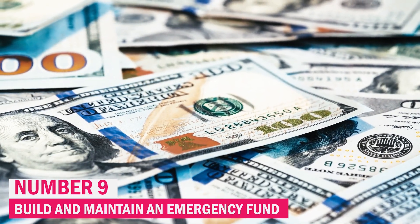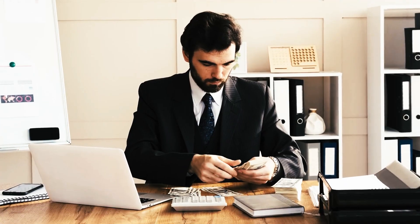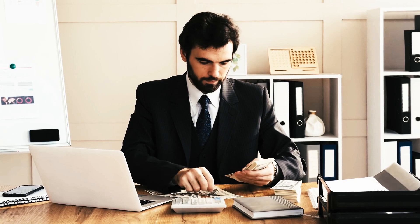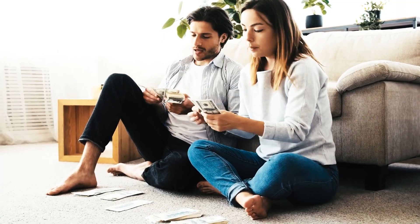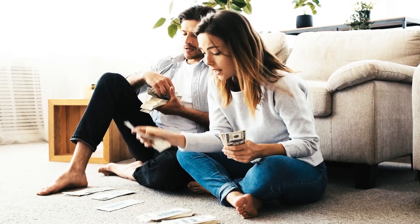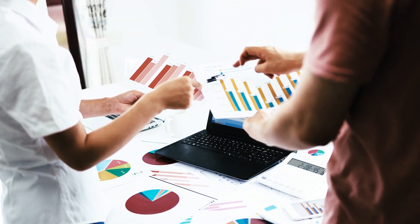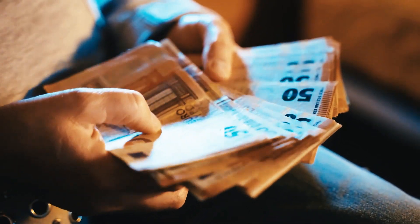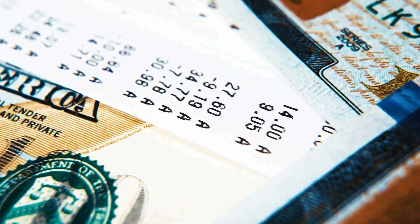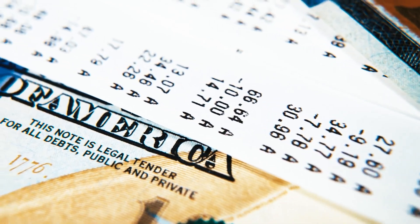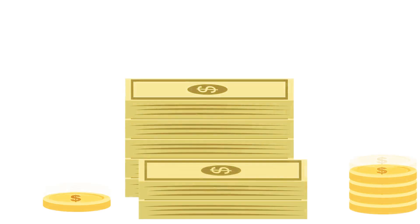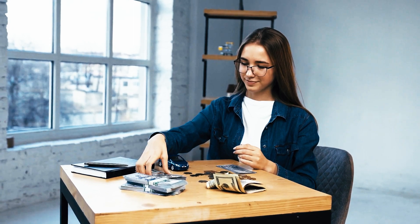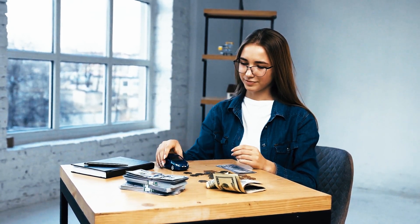Number 9: Build and maintain an emergency fund. Building and maintaining an emergency fund is a foundational step toward financial stability. Aim to set aside three to six months' worth of living expenses in a separate savings account. This fund acts as a financial safety net, providing security during unexpected situations like job loss, medical emergencies, or unforeseen expenses. Consistently contribute to this fund, even during stable financial periods, to ensure its adequacy. Having an emergency fund mitigates the need to rely on high-interest loans or credit cards during a crisis, offering peace of mind and a buffer to navigate through tough times without compromising long-term financial goals.